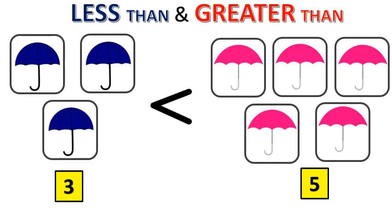Here, 5 is greater than 3 and 3 is less. The number of pink umbrellas are more than the blue umbrellas. So the greater than symbol is towards the pink umbrellas and less than is towards the blue umbrellas.